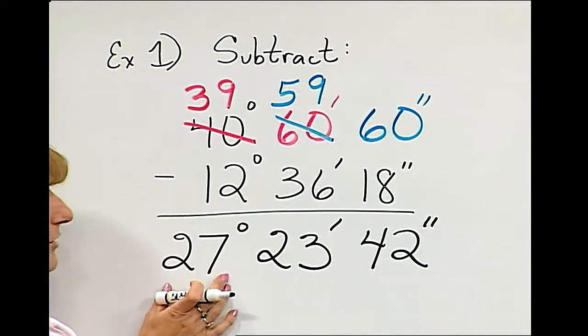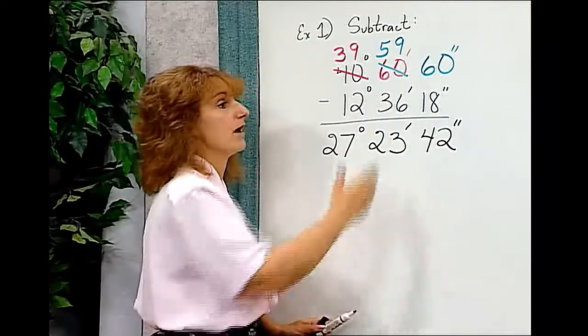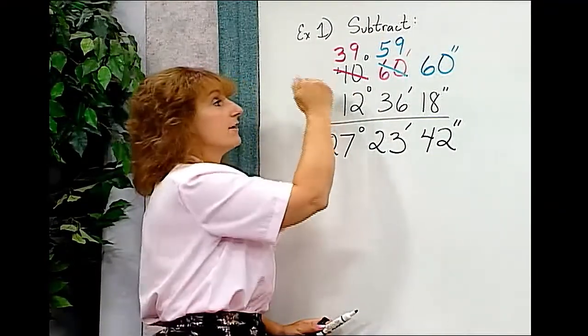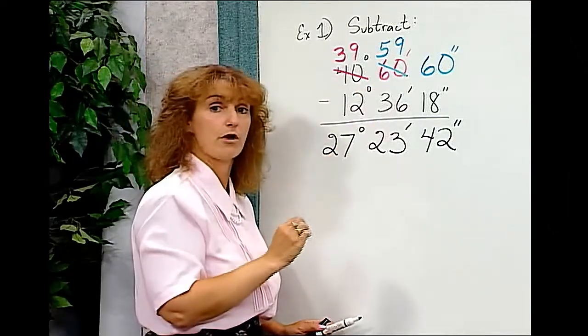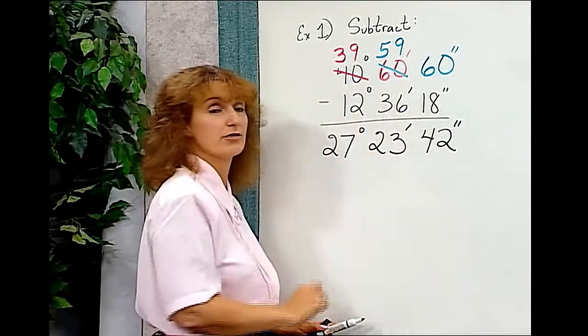So I have 27 degrees, 23 minutes, 42 seconds. Remember that you must line up the columns and do them separately. And if you need to borrow, you're borrowing 60. 60 seconds in a minute. 60 minutes in a degree.